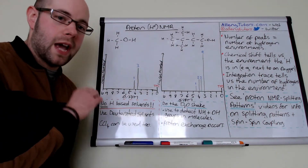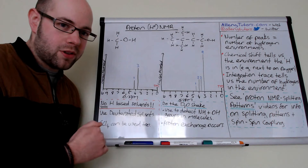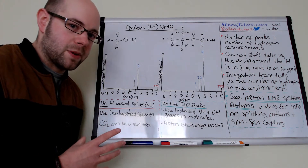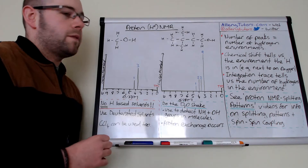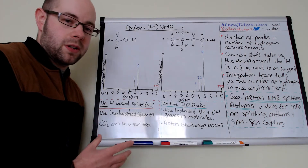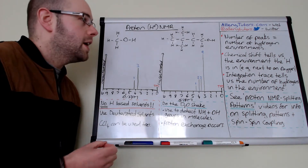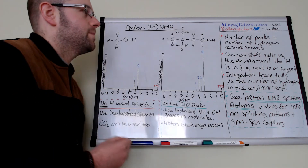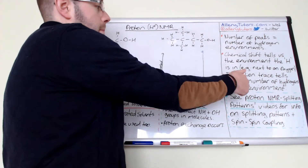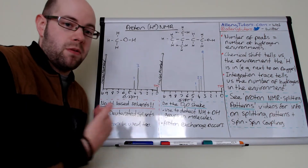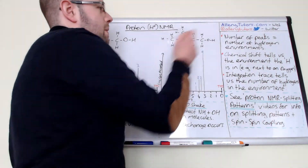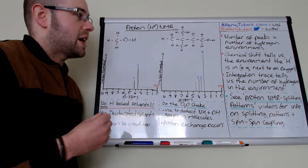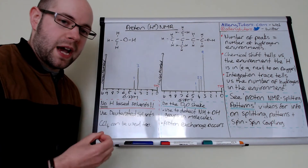Now we're looking at proton NMR. As opposed to carbon-13 NMR where we're looking for carbon environments, in proton NMR we're looking for proton environments instead — so we're looking at the hydrogens in the molecule. The principle is the same as carbon-13. A few points to be aware of: the number of peaks in an NMR spectrum basically tells us how many hydrogen environments we have.